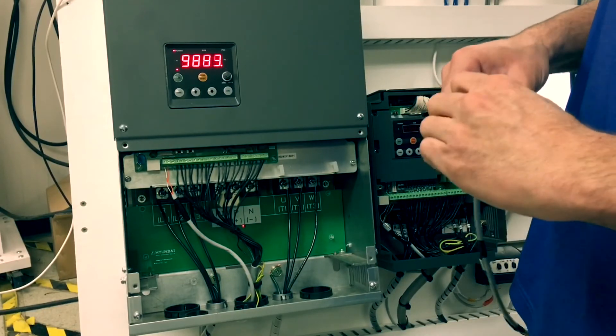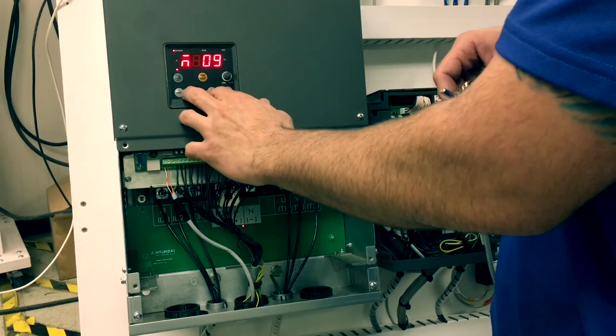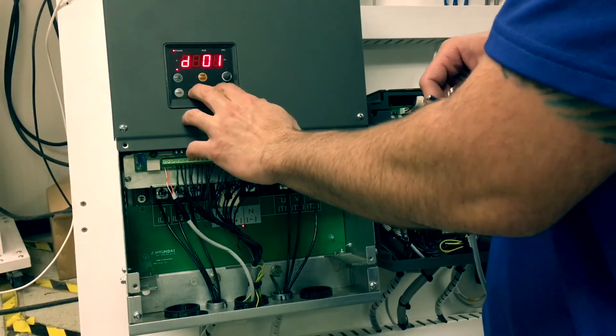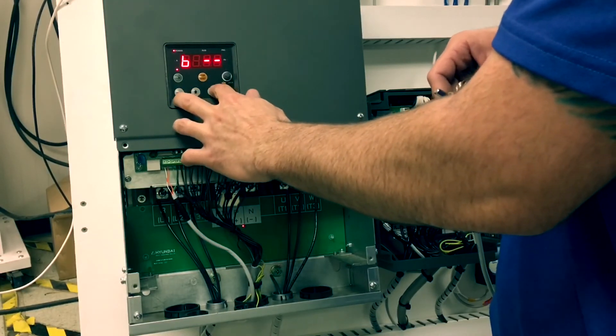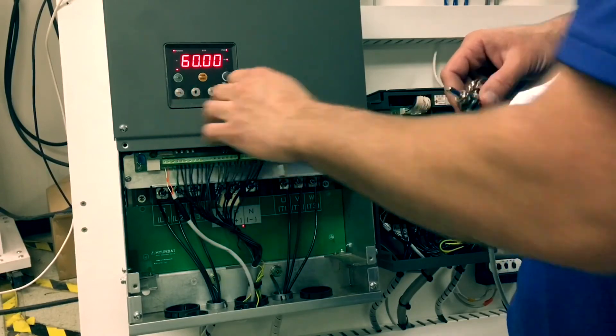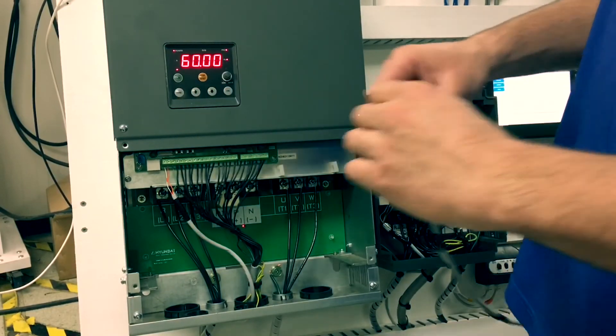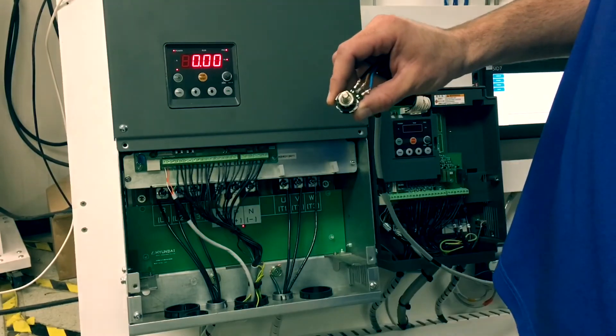Now our speed potentiometer is fully calibrated. We can verify this by going to F01 parameters to show our speed reference in hertz. We show 60 hertz all the way up and 0 hertz all the way down.